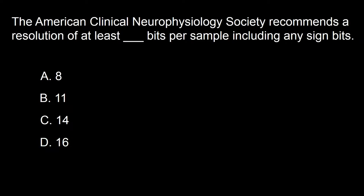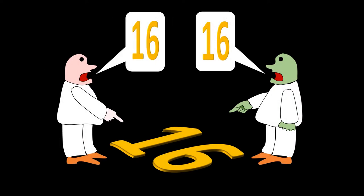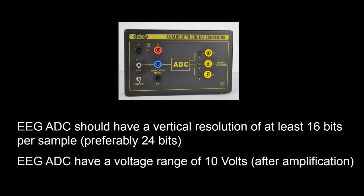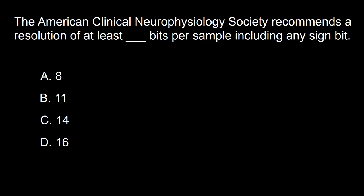Next question: the American Clinical Neurophysiology Society recommends a resolution of at least dash bits per sample including any sign bits. A: 8, B: 11, C: 14, D: 16. The recommended number of bits per sample is 16. EEG analog-to-digital converters should have vertical resolution of at least 16 bits per sample, preferably 24 bits per sample. EEG analog-to-digital converters have a voltage range of about 10 volts after amplification. The answer is D.